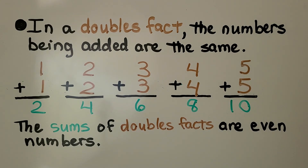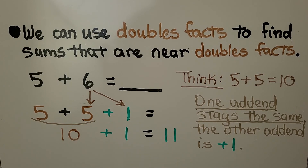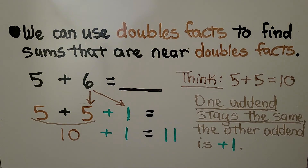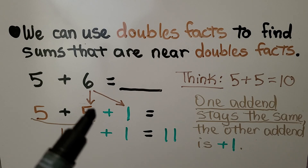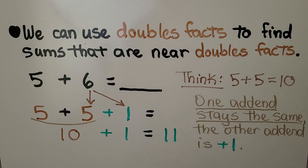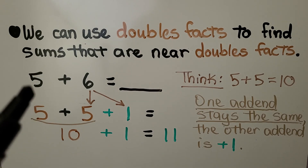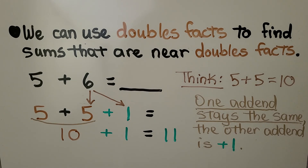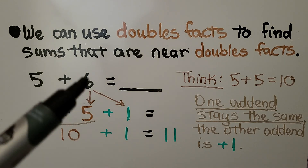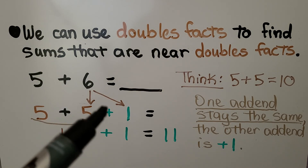We can use doubles facts to find sums that are near doubles facts. For 5 plus 6, we need to find the sum. We think: 5 plus 5 is equal to 10. Because 6 is just one more than 5, we do 10 plus 1 more. That means 5 plus 6 is 11. One addend stays the same, and the other addend is plus 1 from the doubles fact.